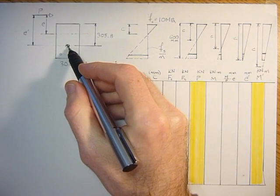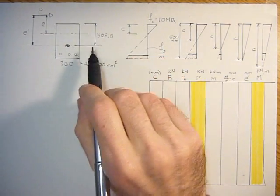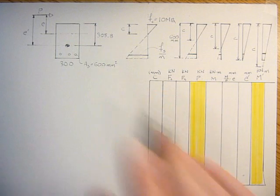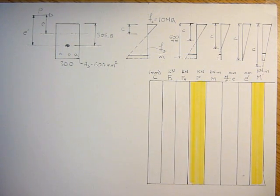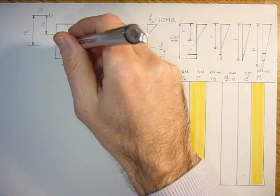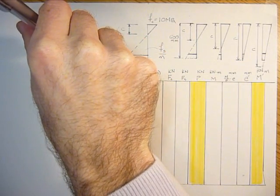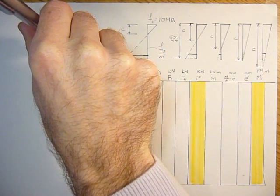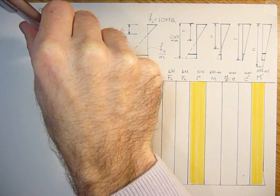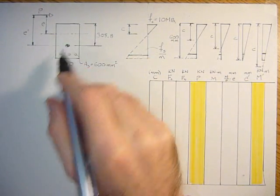This centroid I've drawn here at 305.8 was determined from tutorial 1.1 where we looked at the neutral axis for an uncracked section. And if we apply an axial load right there at that point, it will mean there's no bending, it will be pure compression.